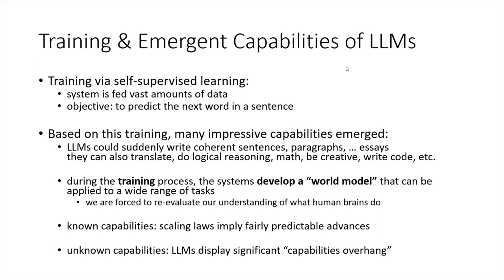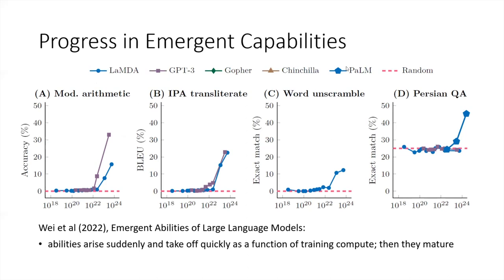Most likely, there is still significant capabilities overhang with models like GPT-4 — meaning they have capabilities we don't even know yet because nobody has tried them out. This is an example of emergent capabilities: they suddenly arise when you throw a certain amount of compute at the problem, then improve very quickly, and then converge towards 100% like an S-curve.